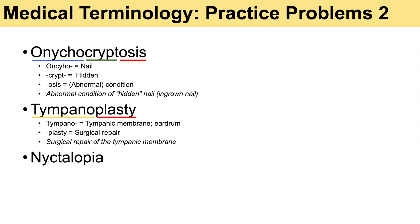The next word is nyctalopia. Nyctal relates to night, nighttime, or darkness. Op means eyes or vision. And ia is a condition. So nyctalopia is an abnormal condition of eyesight at night, meaning difficulty seeing in low light or darkness.